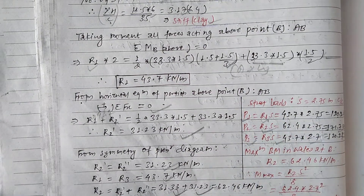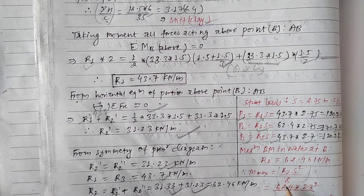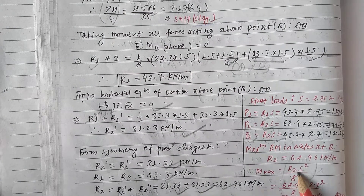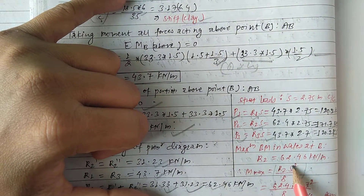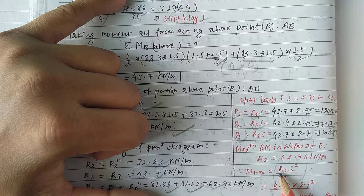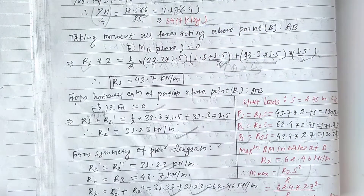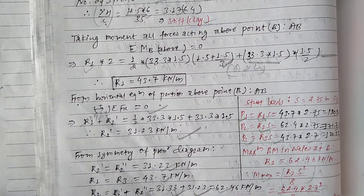The maximum moment formula is R2 times S squared by 8. We can see R2 is 62.46, and the S value is 2.75. The spacing of the length is 2.75. The total load gives the maximum bending. The value is 2.75 squared by 8, which gives 59.04 kg per meter.